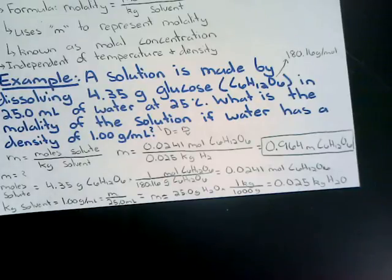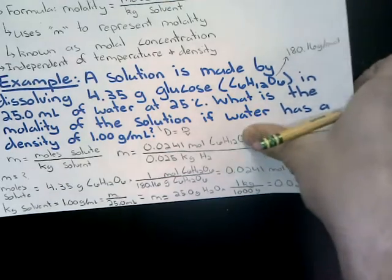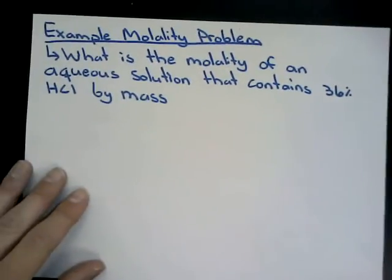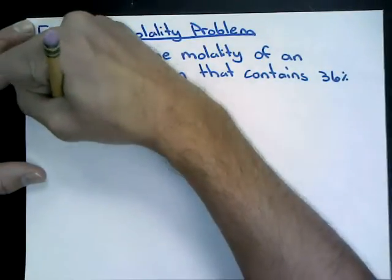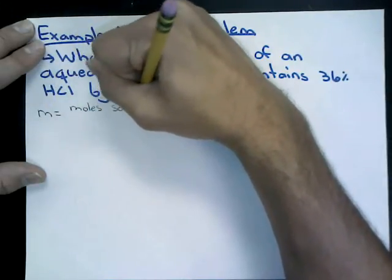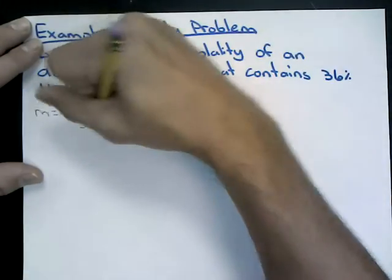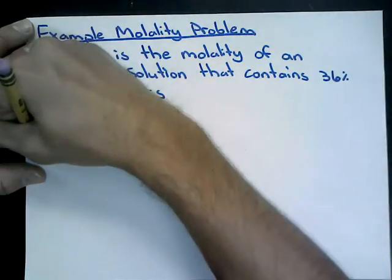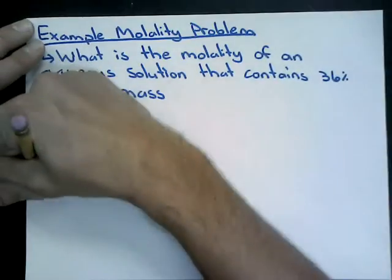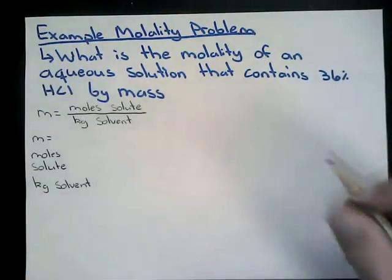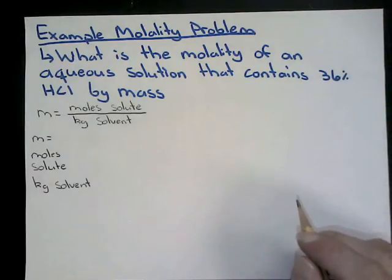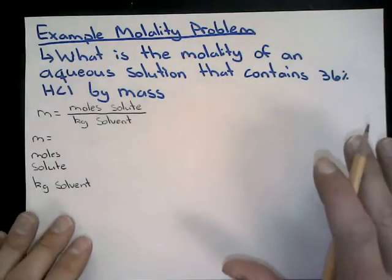We'll solve for molality a slightly different way in this next example. What is the molality of an aqueous solution that contains 36% hydrochloric acid (HCl) by mass? We write down the formula: little m equals moles of solute divided by kilograms of solvent, and then work through what we know about percent by mass.